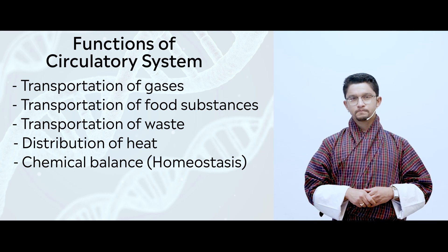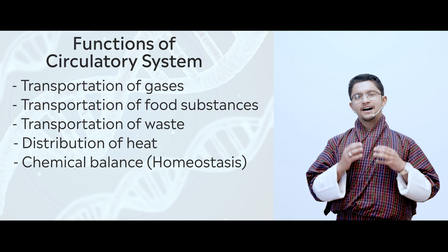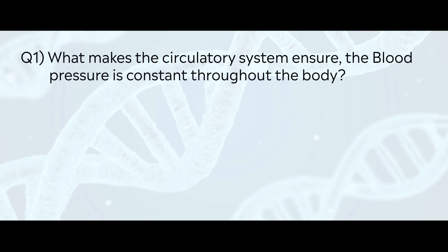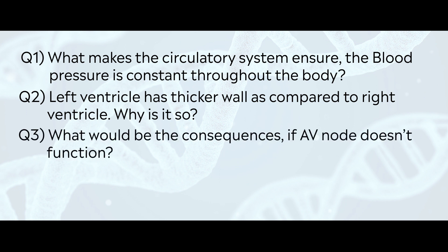I guess you have learnt quite a lot now. Before I end, let me ask you some questions. First question: we know the blood pressure of our body is constrained throughout — so how is our circulatory system able to manage it? Can you explore that? Second question: I told you the left ventricles have thicker walls compared to the right ventricles — why is it like that? Third question: can you predict the consequence if the AV node doesn't function? How would that impact our body?